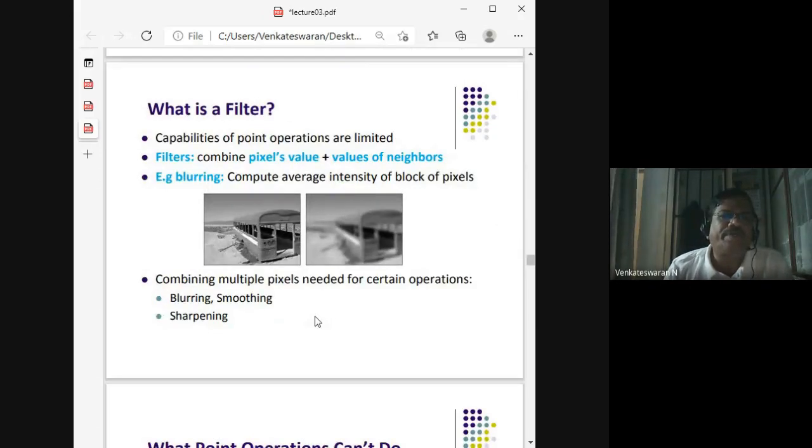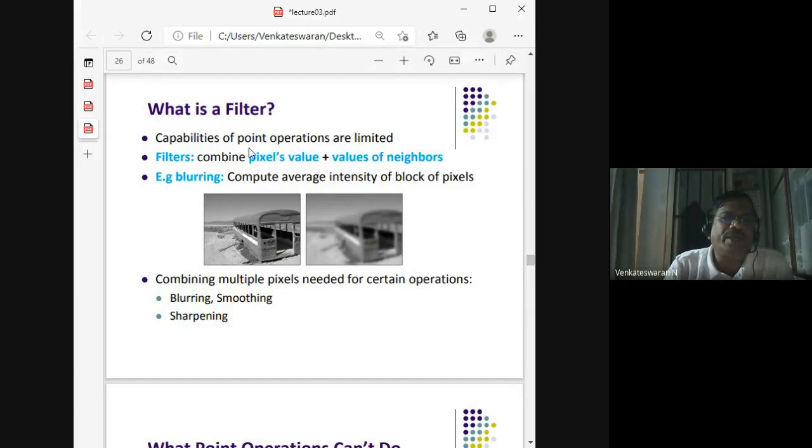We can use filters. Typically, point operators are used for one-to-one transformation. You give a pixel value, you change it to I dash simply using a transform or function. Now what we do with filters is essentially not only take the value of the original pixel, it also takes the neighboring pixel values in order to get a new pixel value. So I dash is now a combination of I plus its neighbors.